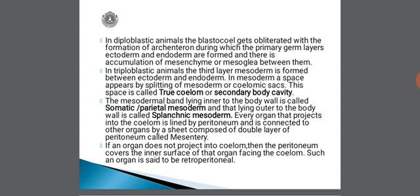In diploblastic animals, the blastocoel gets obliterated with the formation of the archenteron or gastrocoel, during which the primary germ layers ectoderm and endoderm are formed, with accumulation of mesenchyme or mesoglia between them. All diploblastic animals are said to have this type of body condition. In triploblastic animals, the third layer mesoderm is formed between ectoderm and endoderm. A space appears by splitting of mesoderm or coelomic sacs, called the true coelome or secondary body cavity. The mesodermal band lying inner to the body wall is called somatic or parietal mesoderm, and the one lying outer to the gut wall is called splanchnic mesoderm. Every organ that projects into the coelome is lined by peritoneum and connected to other organs by a double layer of peritoneum called mesentery.